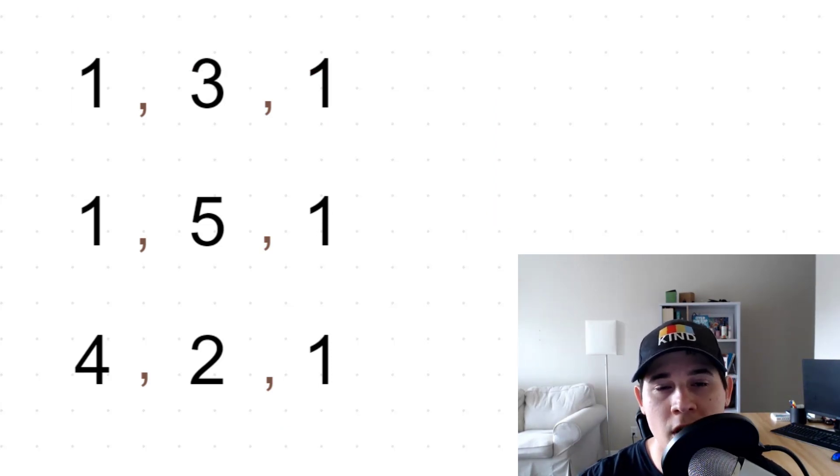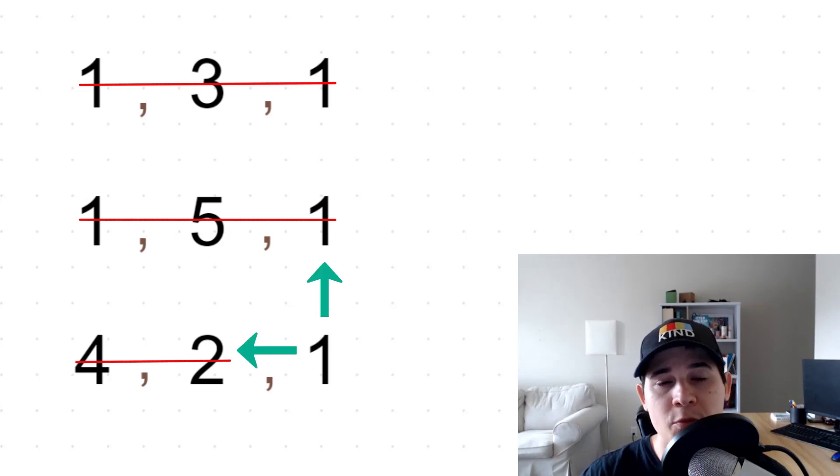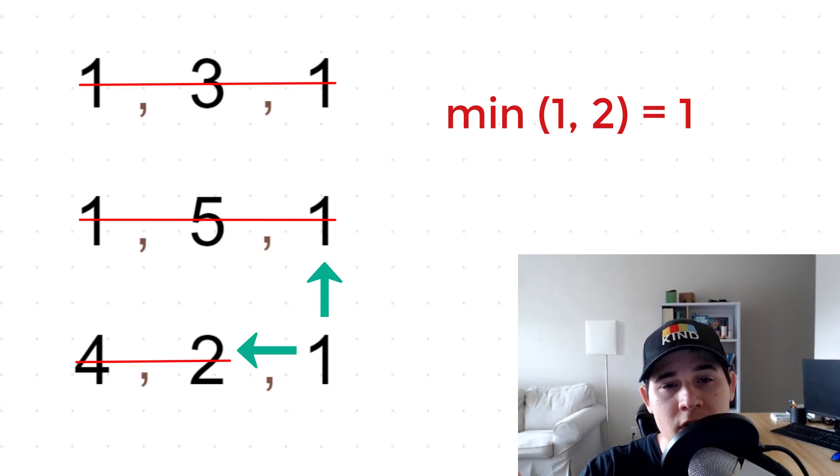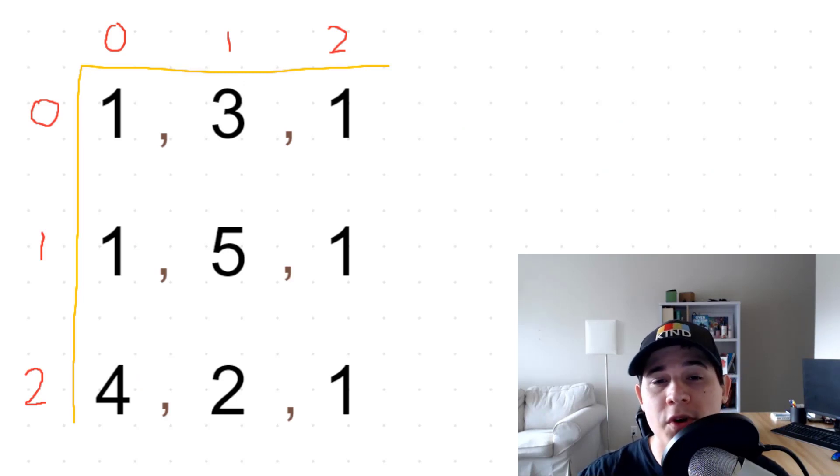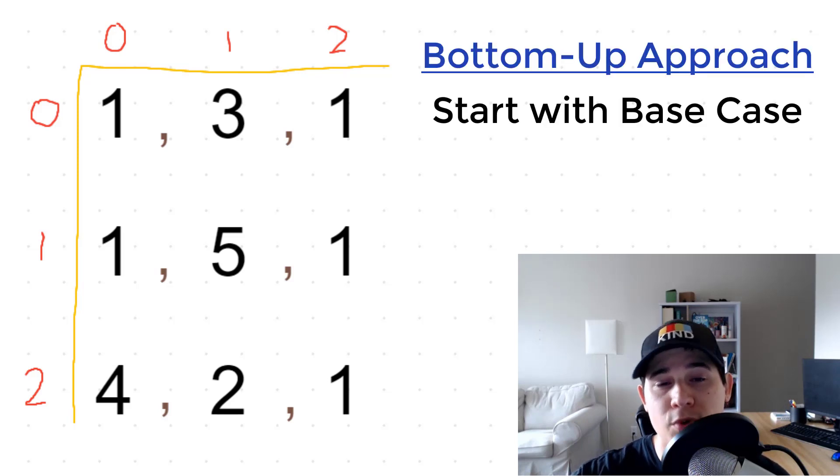So the way we're going to solve this problem is we're going to iterate over every single cell in our grid. And as we are iterating over each position, we are going to look above us and to the left, and we're going to get the minimum number in either of those cells and add it to our current position. That way, as we are iterating over each cell, by the time that we get to the bottom right position, we will know the least sum at that time. Just like in any standard DP problem, we're going to come up with a recurrence relation in order to create a bottom-up approach.